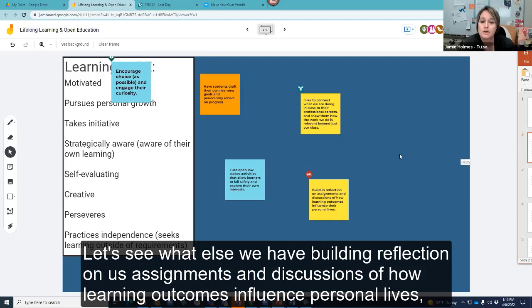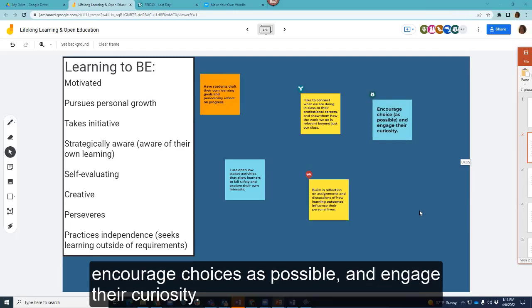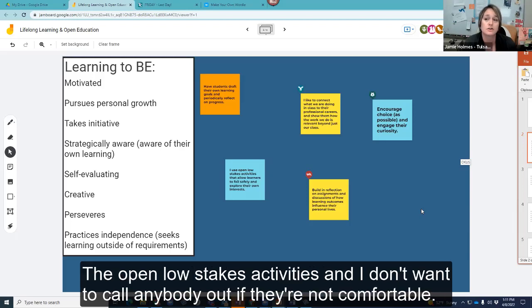All right, let's see what else we have. Build in reflection on assignments and discussions of how learning outcomes influence personal lives. Open low stakes activities that allow learners to fail safely and explore their own interests. And encourage choices as possible and engage their curiosity.